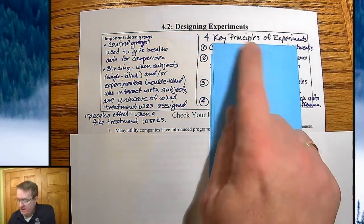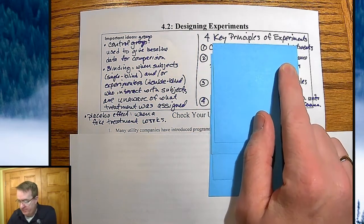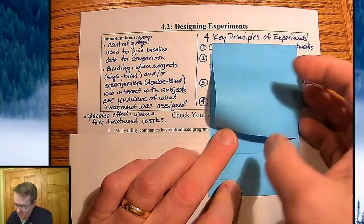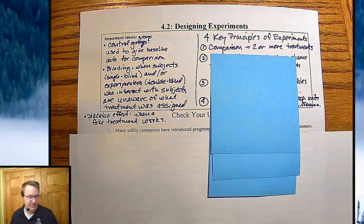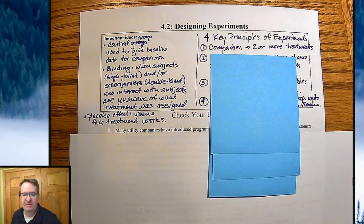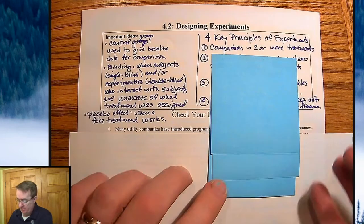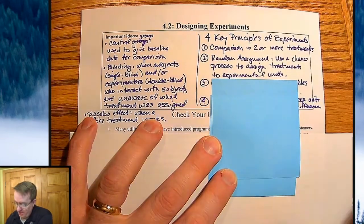Now for the four key principles of experiments, here are the four things that you need to have happen when you set up an experiment. First of all, you need to have a comparison. You need to have at least two or more treatments. And one of the treatments is that you're doing nothing, so that's going to be your control. But you have to be able to compare it to something else. There's no comparison, it's not an experiment.